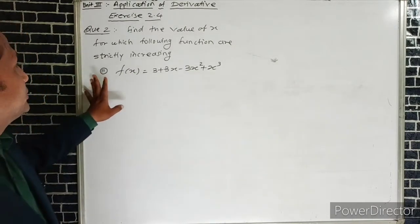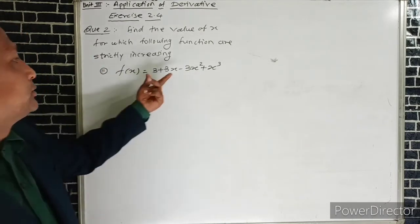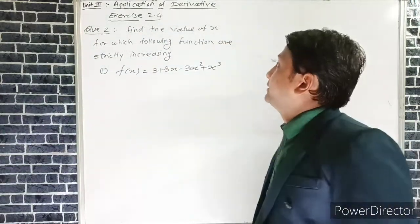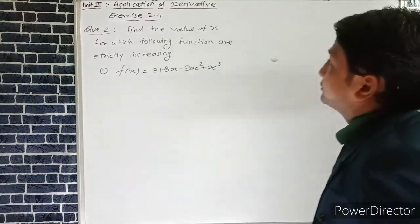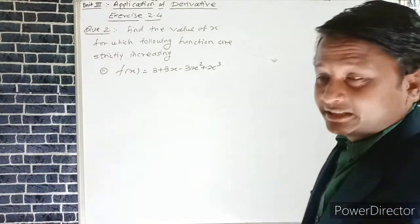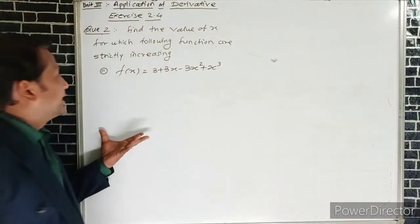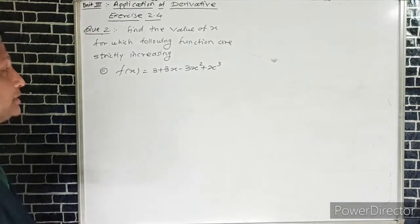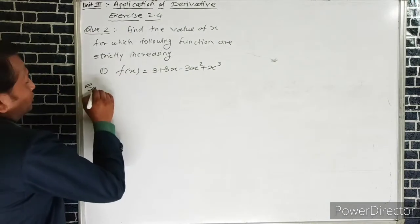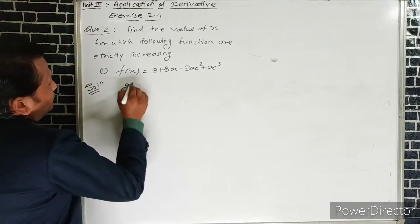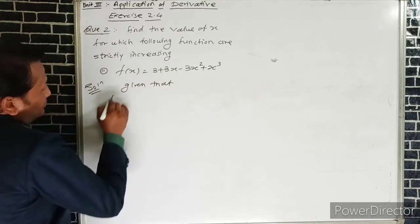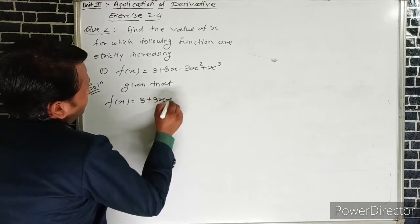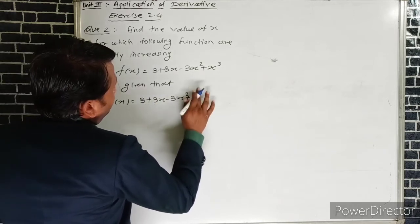The second function in question number 2: f(x) = 3 + 3x - 3x² + x³. We need to find the value of x when the function is strictly increasing. By the given condition, if the function is strictly increasing, f'(x) > 0. We differentiate: the derivative of 3 is 0, plus 3(1), minus 3(2x), plus 3x².